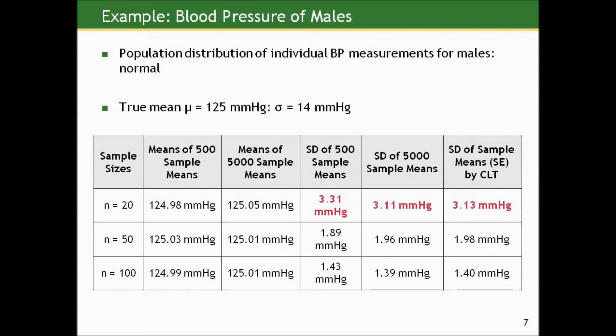In that last column, what I've done is taken the true standard deviation of the population values and divided it by the square root of 20 — and that's what the central limit theorem tells us the standard deviation of all sample means from all possible random samples of size 20 will be. Our standard deviation of 500 and 5,000 sample means, respectively, are just estimates of that, and you see they all line up pretty closely. Similarly for those based on n equals 50 and n equals 100.